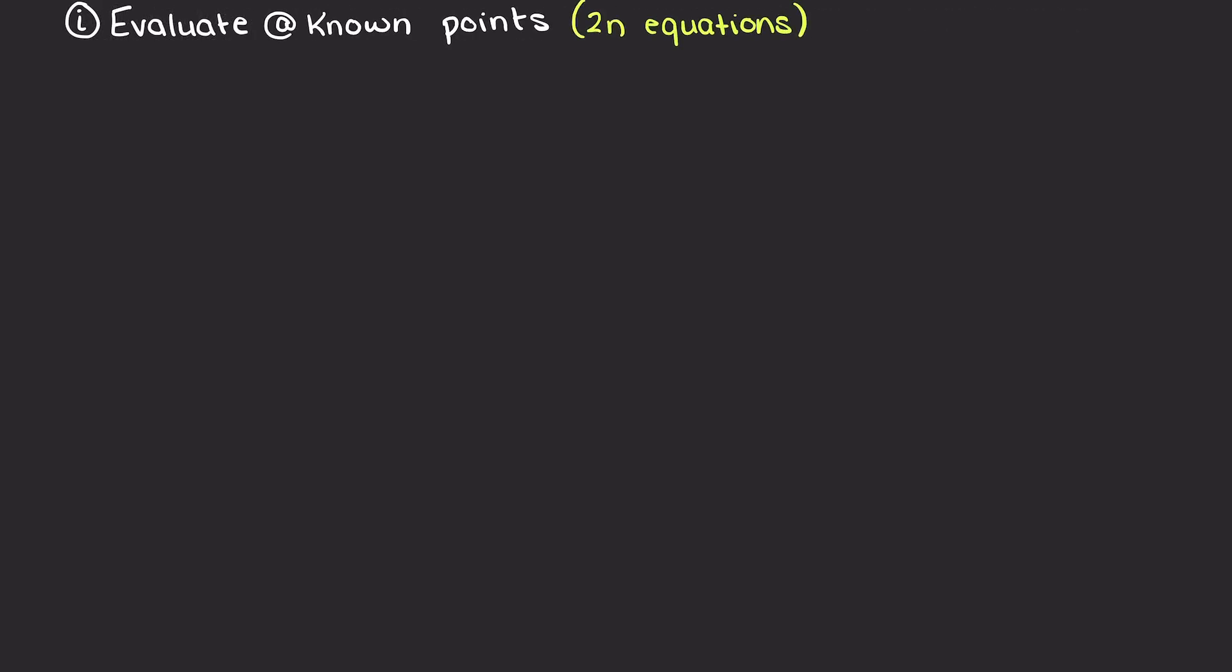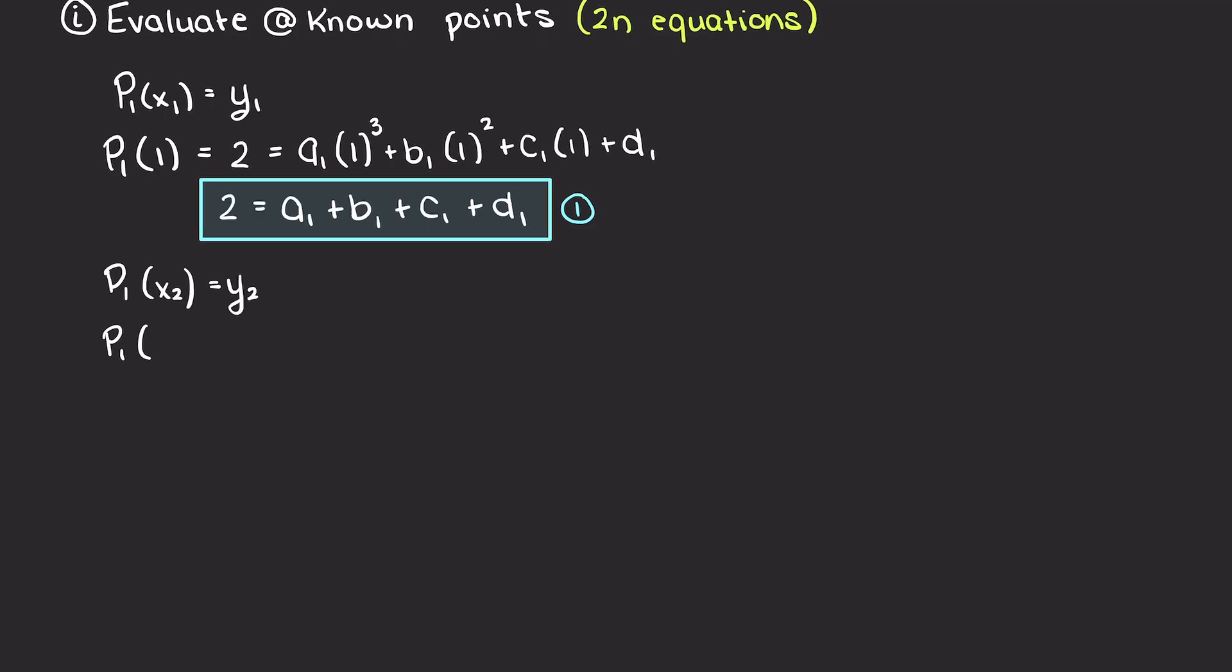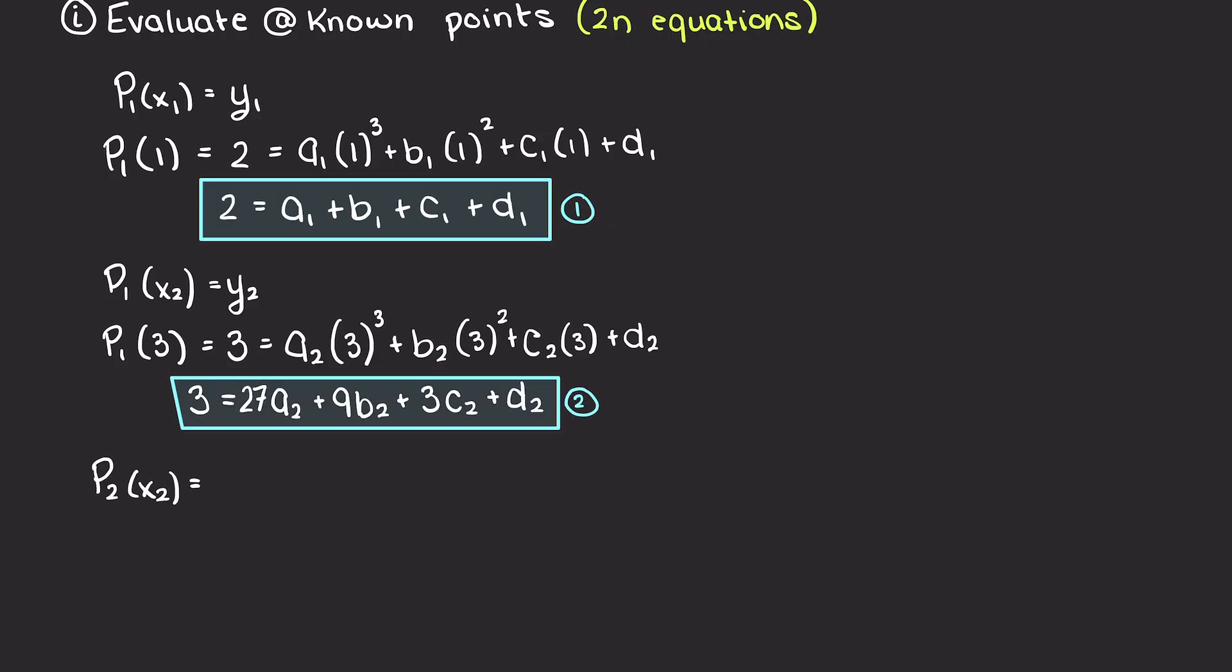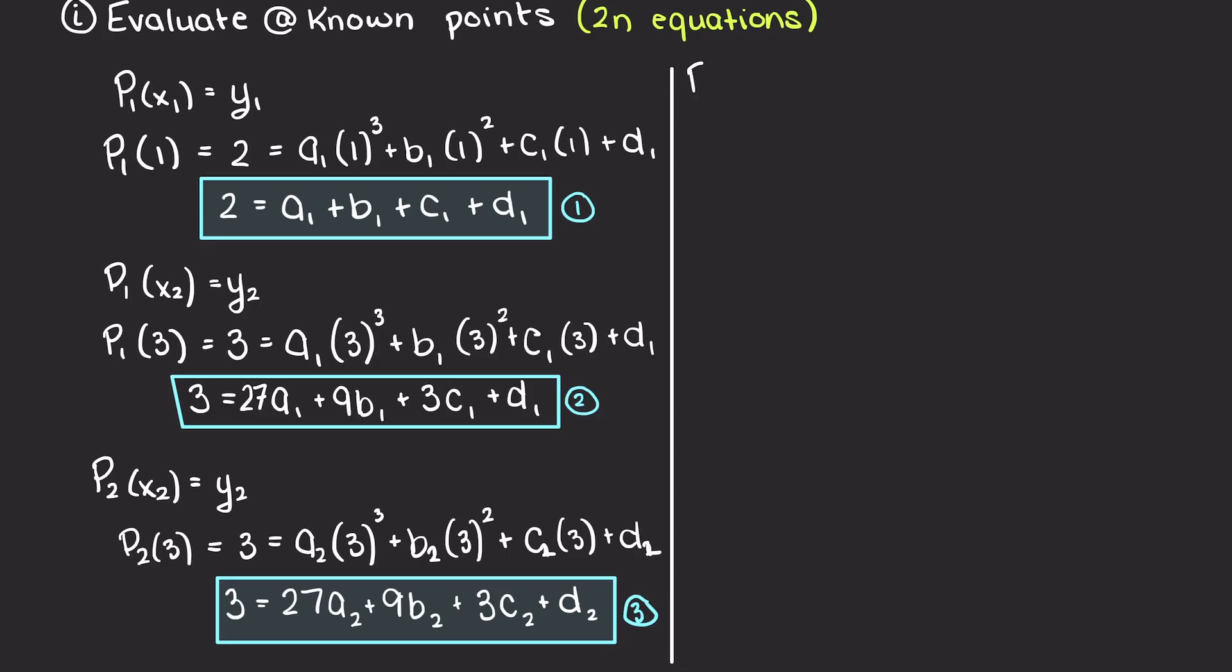As we learned in the previous theory video, we can get 2n equations through evaluating each of the 3 polynomial functions at our known data points. So, let's just go ahead and do that. All we're doing here is plugging in our x values at our known points and simplifying. But to elaborate a bit more, we are going to evaluate our first polynomial with its 2 data points, so x1 and x2. P2 will be evaluated at x2 and x3. And lastly, P3 will be evaluated at x3 and x4.